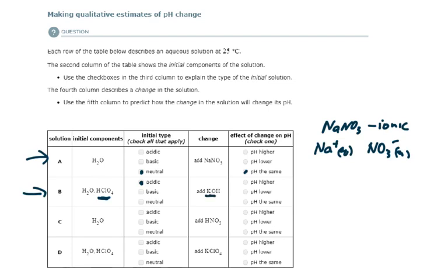If I add potassium hydroxide, KOH is going to dissolve as a strong electrolyte. It's a strong base.